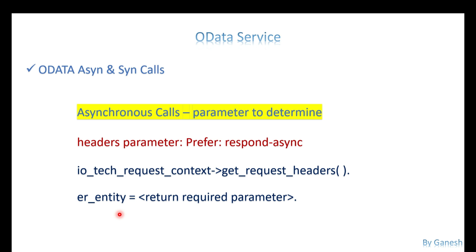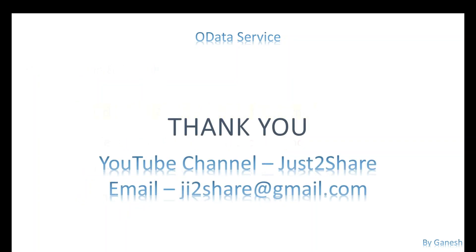Then you can send a return message — not the actual process result, but a confirmation that the request was received and the process is submitted. For example, if it's a batch job, you can send back the job ID to the UI so they can check the status of that job ID later.